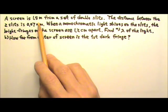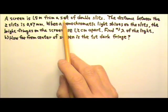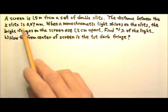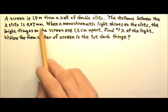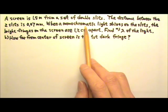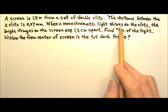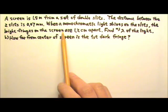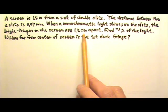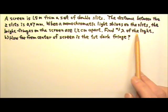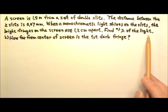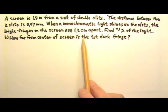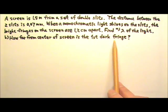A screen is 1.5 meters from a set of double slits. The distance between the two slits is 0.07 millimeters. When a monochromatic light shines on the slits, the bright fringes on the screen are 1.2 centimeters apart. Find A, the wavelength of the light, and B, how far from the center of the screen is the first dark fringe.